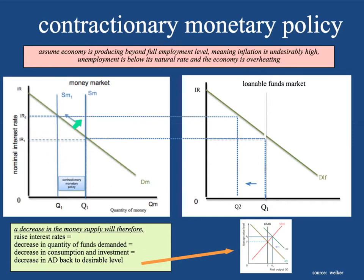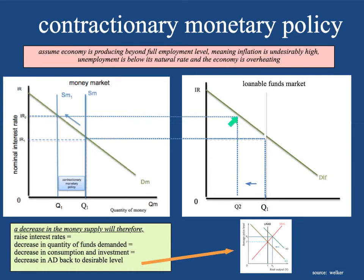If interest rates are up, transfer this over to the loanable funds market. If you didn't see the expansionary monetary policy video where the loanable funds market was explained — it's really simple. This is the market for funds that you can loan, that you can borrow. What's the price of loanable funds? The interest rate. How is the interest rate derived? From the money market diagram. The government just cut the supply of money flowing through the economy from SM to SM1. What happened to the interest rates? It went up. So therefore, what happened to the price of borrowing money? It went up from IR1 to IR2. What's that going to do to the quantity of loanable funds that are demanded out in the marketplace? It's going to decrease them.